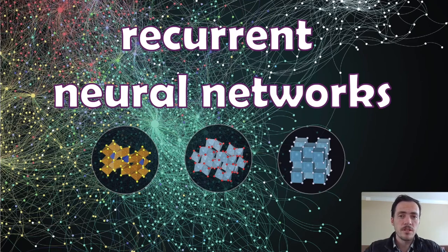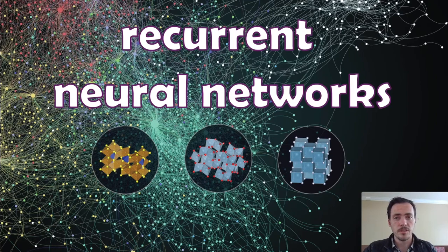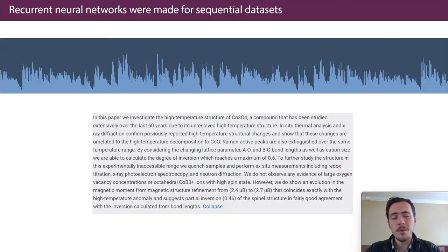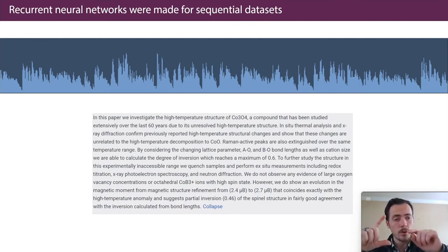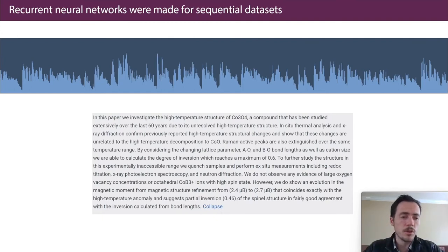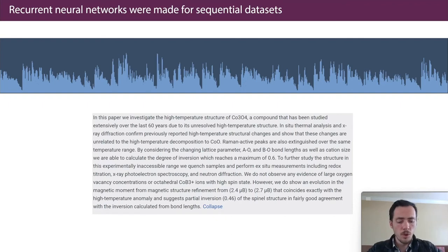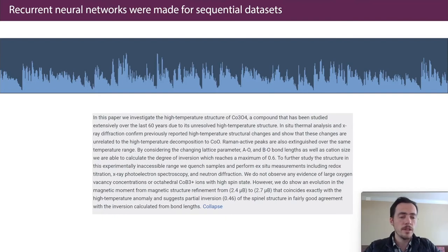Today we're going to talk about another amazing advancement in deep learning which can be applied to material science as well, and this one has to do with recurrent neural networks. In the last video we said that where pixels are located positionally matters. Well, in this video we make a similar argument but this time it has to do with the sequence of the data that gets fed in. It makes sense that some information can only be best understood if you preserve the sequence in which it was captured.